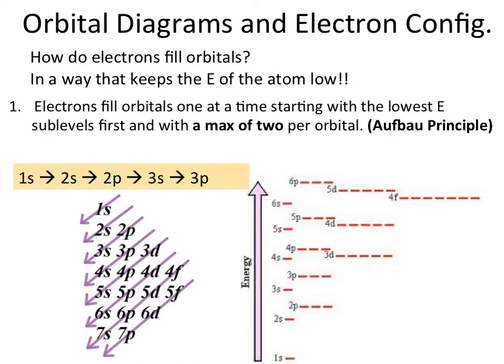Some of you may have learned the filling procedure by reading the periodic table like a book, going left to right: 1s, 2s, 2p, 3s, 3p, 4s, 3d, etc. This is the Aufbau principle — electrons fill orbitals one at a time, and there is a maximum of two electrons per orbital.